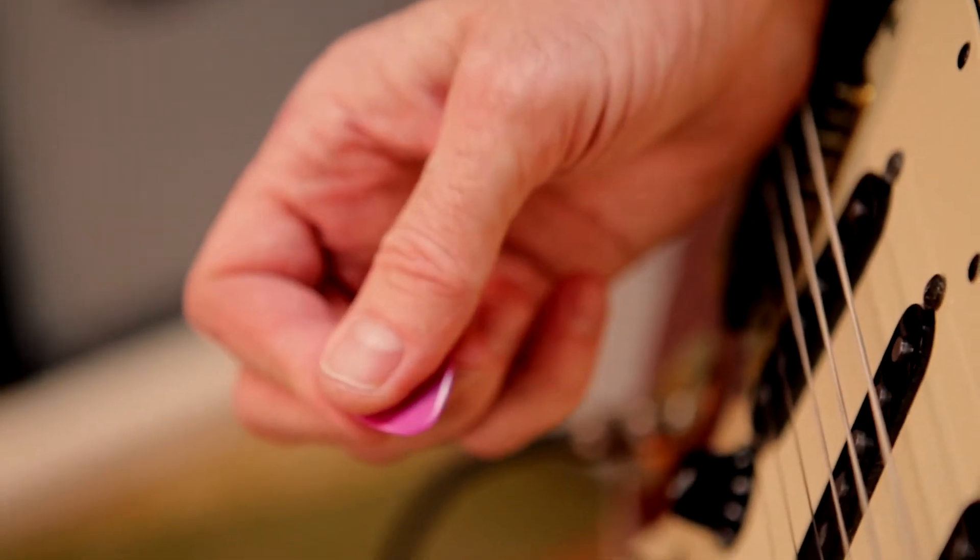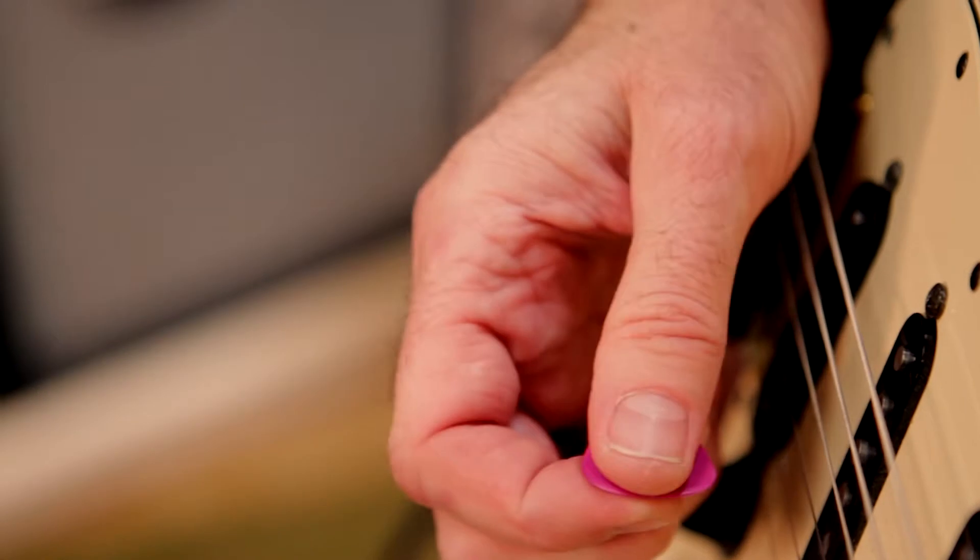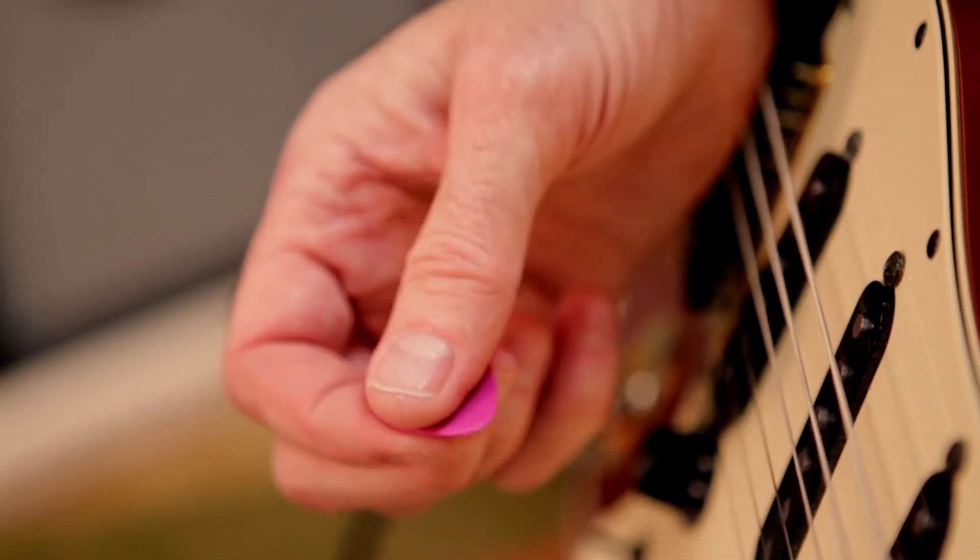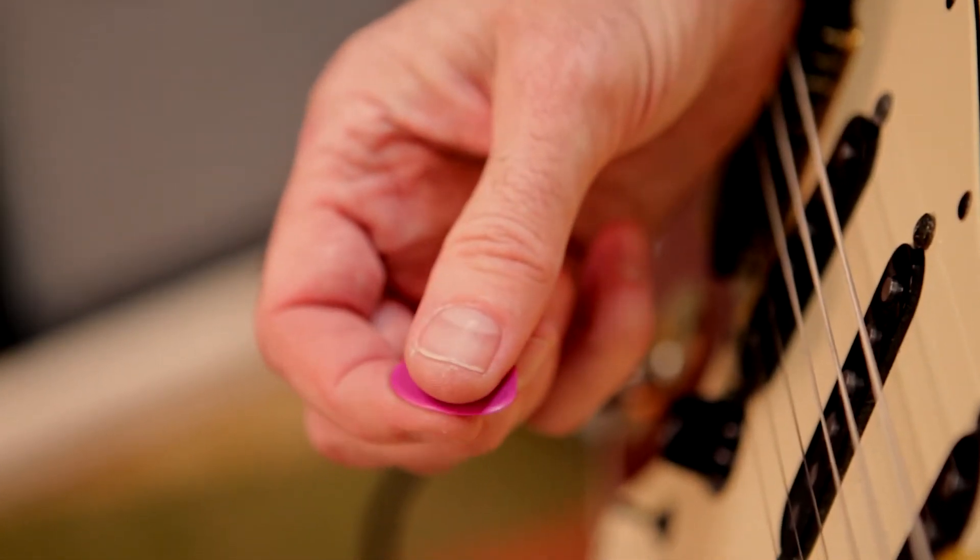You don't need much pick out from the side of your thumb, about that much. If you feel skin hitting, add a little more pick. If you don't, chunk up on it a little bit.